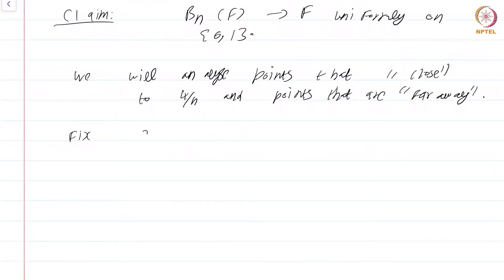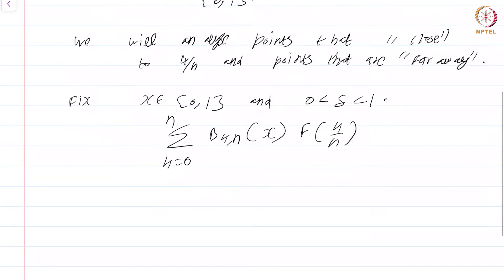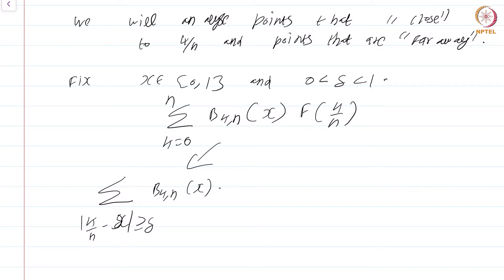Fix x in the closed interval [0,1] and 0 < δ < 1. We want to analyze the sum Σ_{k=0}^{n} b_{kn}(x) · f(k/n), which is what B_n(f) is. To analyze this, we will first focus on the sum of the Bernstein polynomials over those k for which |k/n − x| ≥ δ, that is, where k/n is far away from x.